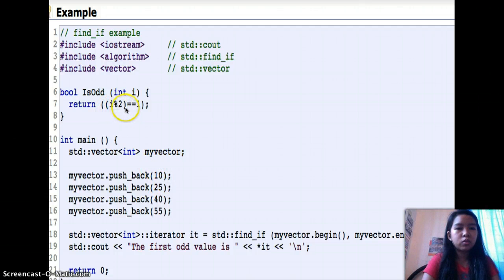i modulo 2 equals equals 1. 10 will be the i. So 10 modulo 2 is 0. Since 0 is not equals equals to 1, it will not be the first odd value.